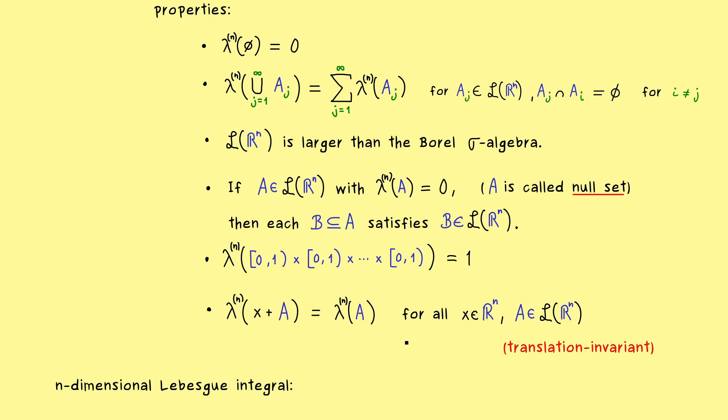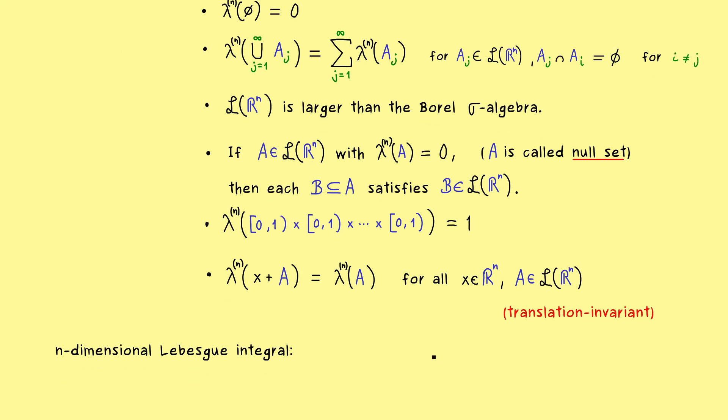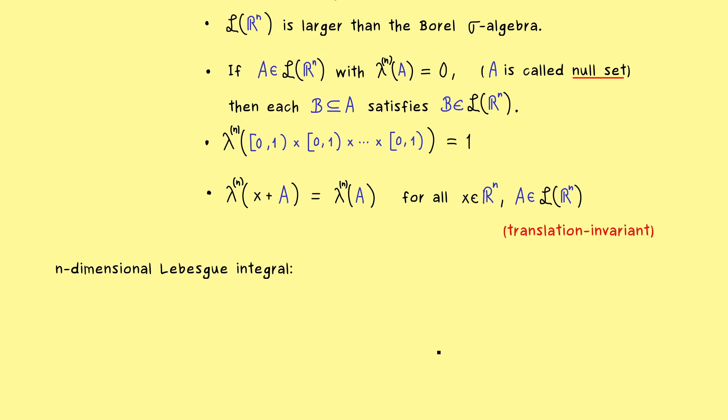And at this point I can mention again, this whole description with measures is so helpful, because we immediately get the n-dimensional Lebesgue integral as well. So we don't have to do any new definitions, we immediately get it by measure theory. And at this point you already know, usually we will not mention Lambda, we will just write dx.